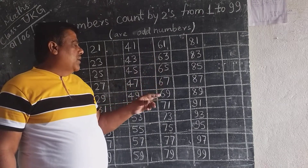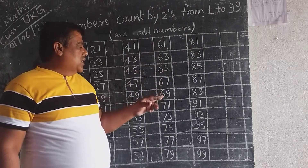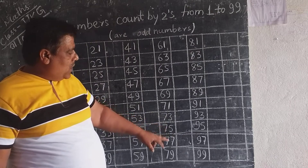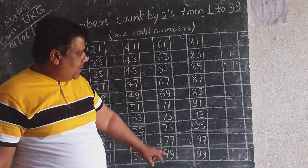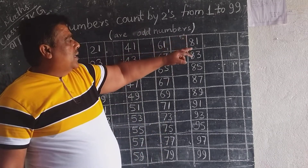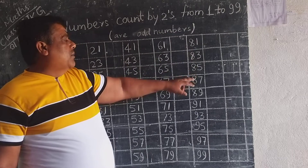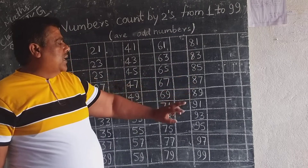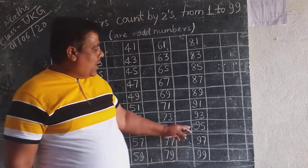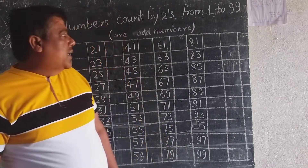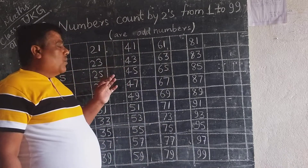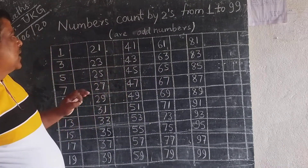65, 67, 69, 71, 73, 75, 77, 79, 81, 83, 85, 87, 91, 93, 95, 97, and 99. This is the count by 1 to 99 numbers.